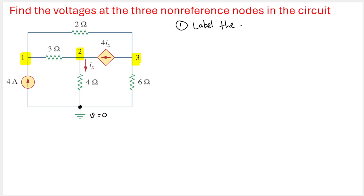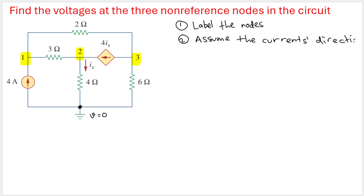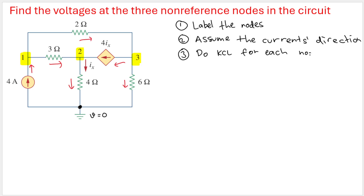The second step is to assume the direction of the current. For branches with a current source, we follow the arrow — this one is going up, and this one is going to the left. For the rest, we assume current is going to the right here, to the right here, going down here, and going down here. The third step is to apply KCL at each node.